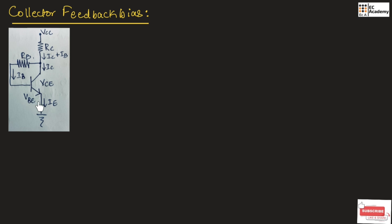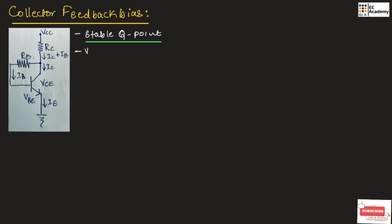The figure shows the collector feedback bias circuit. Here, base will be the input terminal and collector will be the output terminal. From the output, there is a feedback to the input. That's why it is known as collector feedback bias. This type of biasing is used to get a stable Q-point. A voltage is fed back to the base to neutralize any change in collector current.